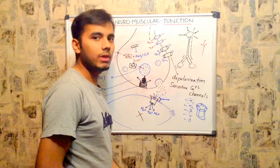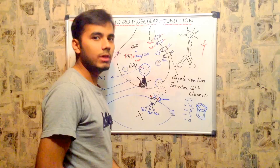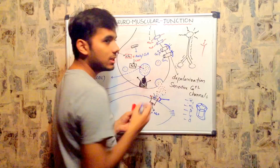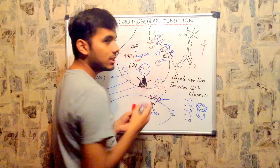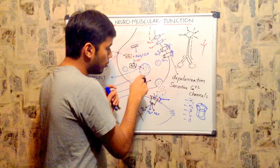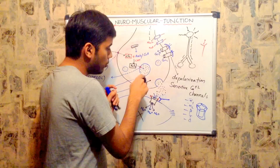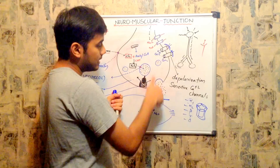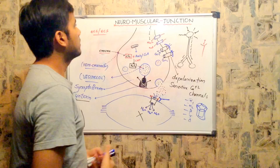In Lambert-Eaton syndrome, the calcium channels are completely blocked. When the calcium channels are blocked, calcium cannot enter and cannot bind to the two sticks of syntaxin, so the active site is never opened. There is no fusion of the vesicle with the syntaxin protein, no release of acetylcholine, and so muscle transmission is stopped.